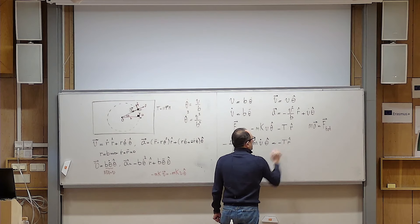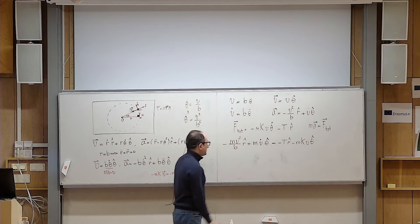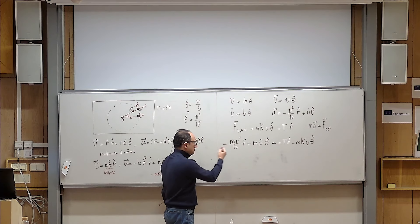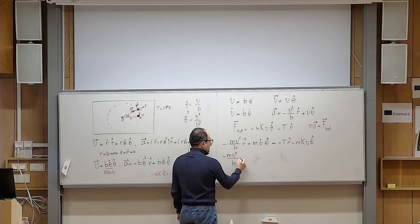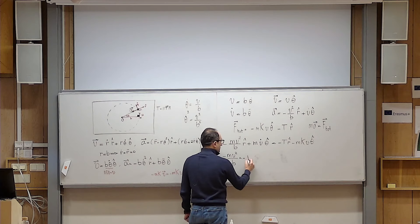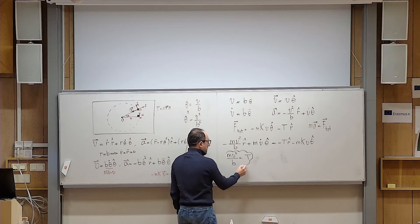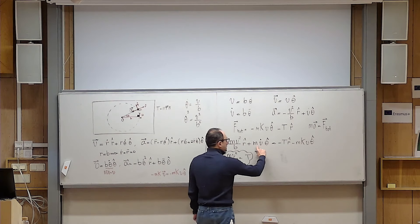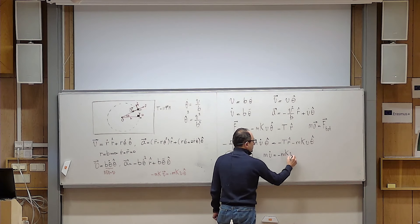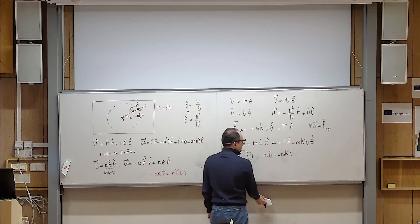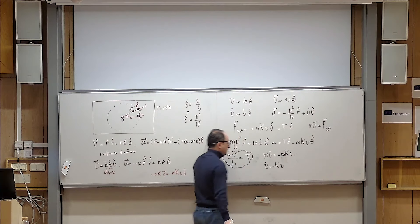Newton's second law gives m·a = F_total. The left-hand side is m·[−(V²/b)·r̂ + V̇·θ̂] and the right-hand side is −T·r̂ − mkV·θ̂. Matching components: the r-hat component gives T = mV²/b, which I will keep for later. The theta-hat component gives m·V̇ = −mkV, which simplifies to the differential equation V̇ = −kV.